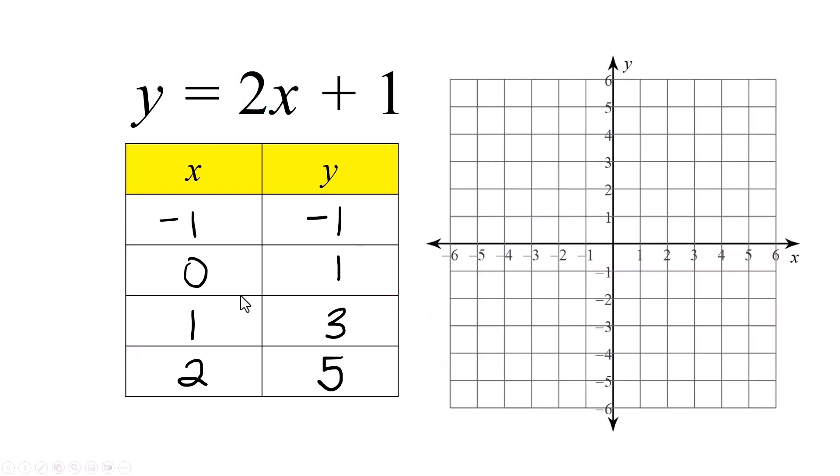Let's check the graph. We're going to find the y-intercept. I'll explain that in a second when you can see it. Negative 1, negative 1. That point is right here. Zero, 1 is right there. By the way, that's the y-intercept if you are with me. One and 3. And 2 and 5. That's this point. Graph the line.